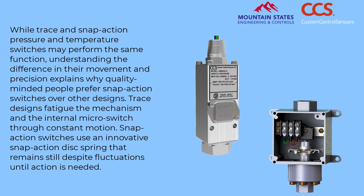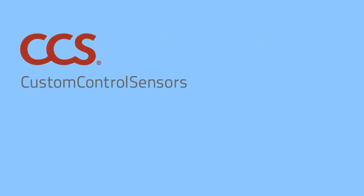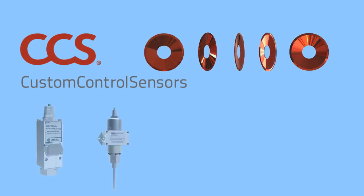While trace and snap action pressure and temperature switches may perform the same function, understanding the difference in their movement and precision explains why quality-minded people prefer snap action switches over other designs. Trace designs fatigue the mechanism and the internal micro switch through constant motion. Snap action switches use an innovative snap action disk spring that remains still, despite fluctuations, until action is needed. The company CCS pioneered the dual snap, snap action disk, used to provide accurate and reliable pressure and temperature measurement under every operation.